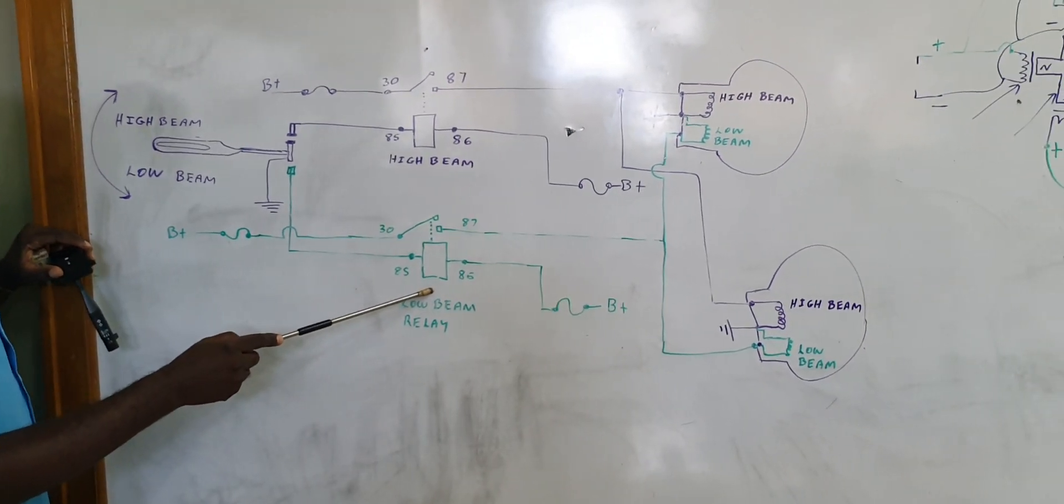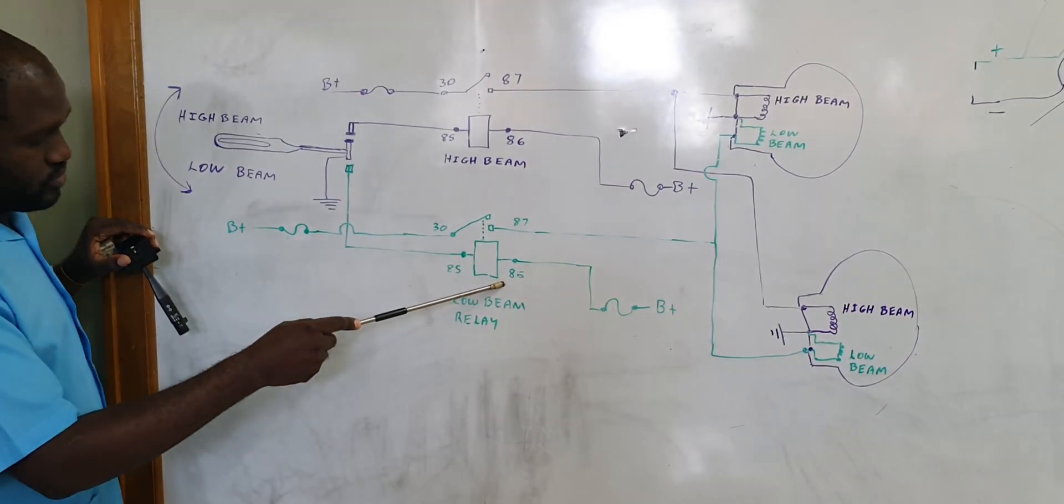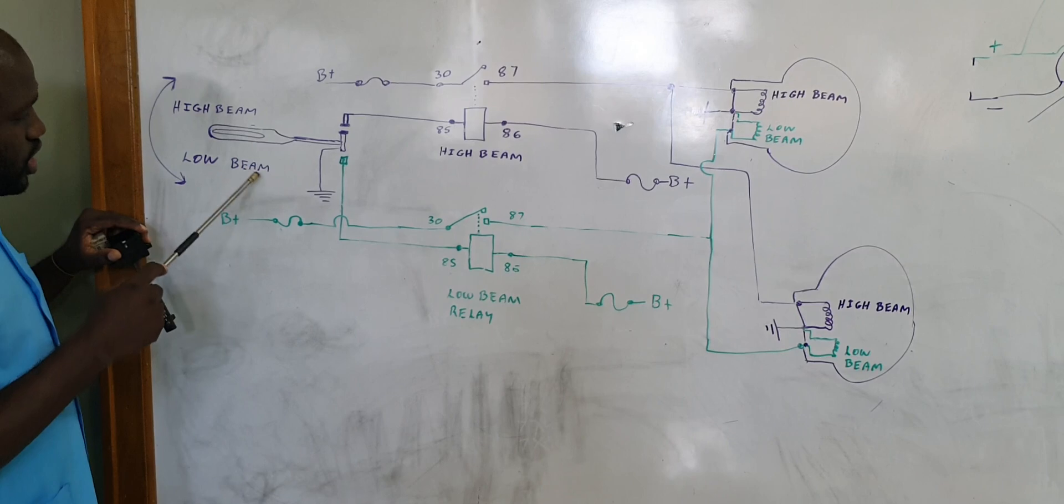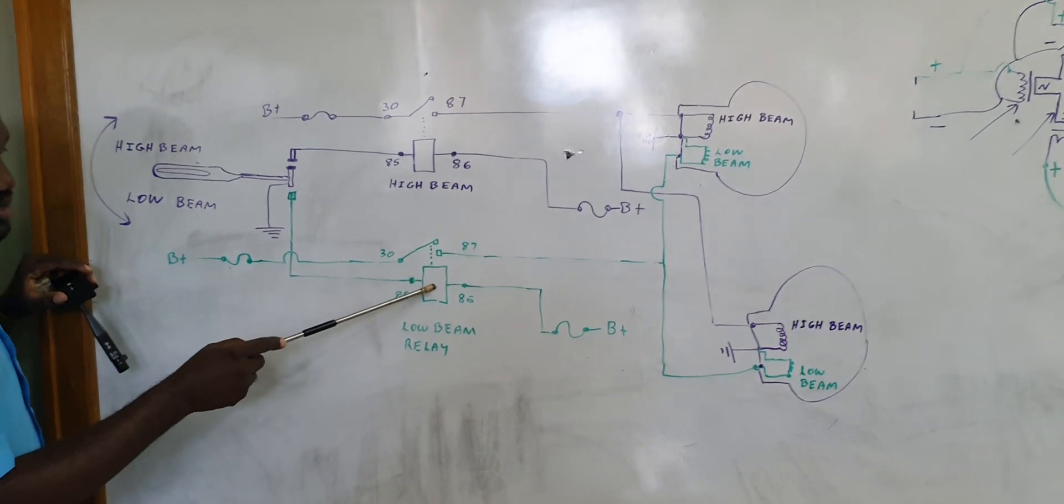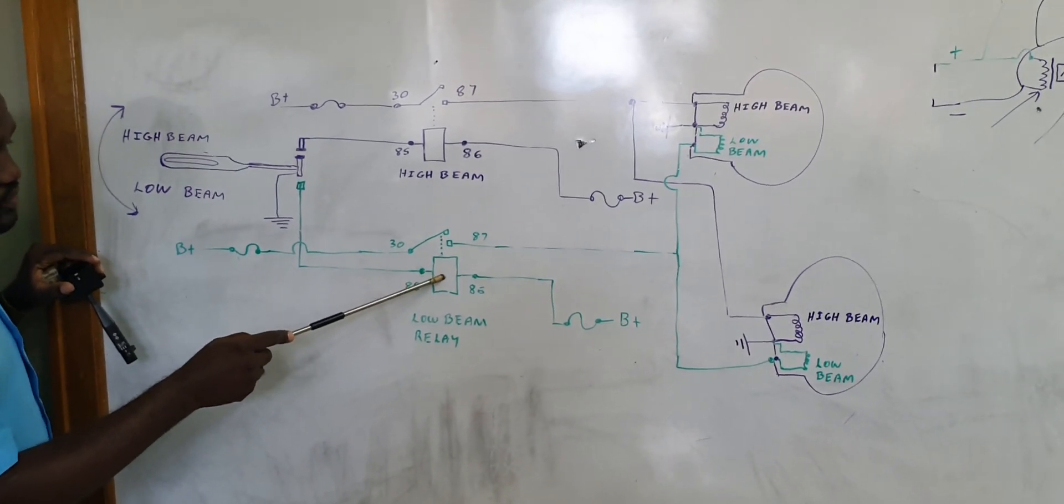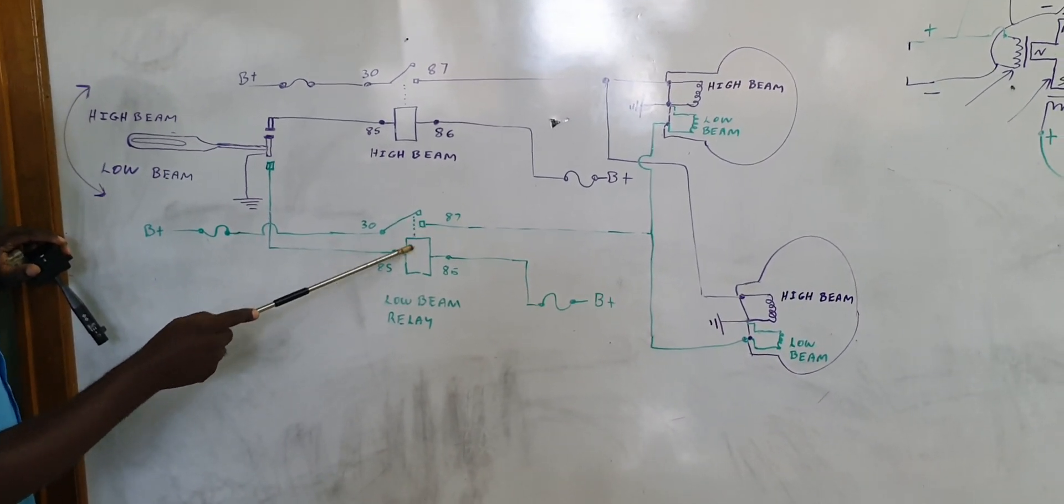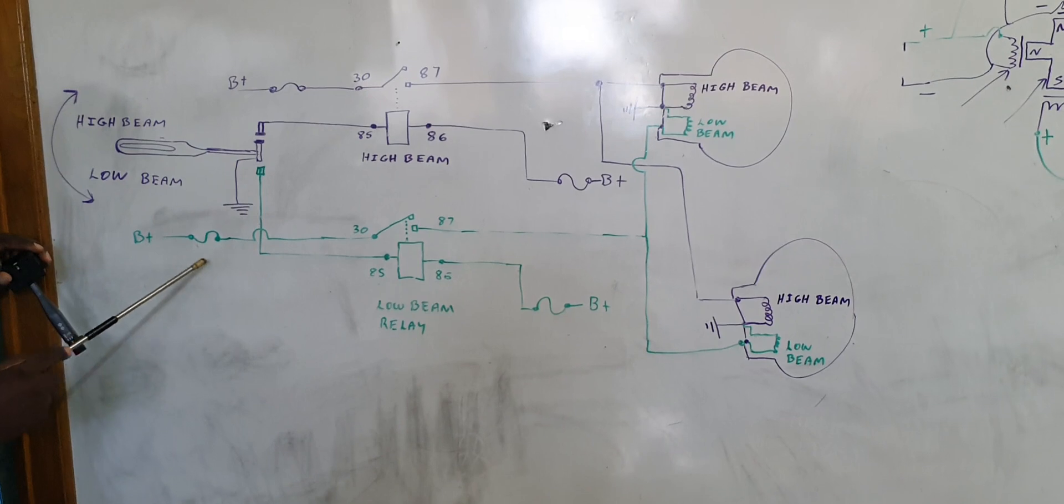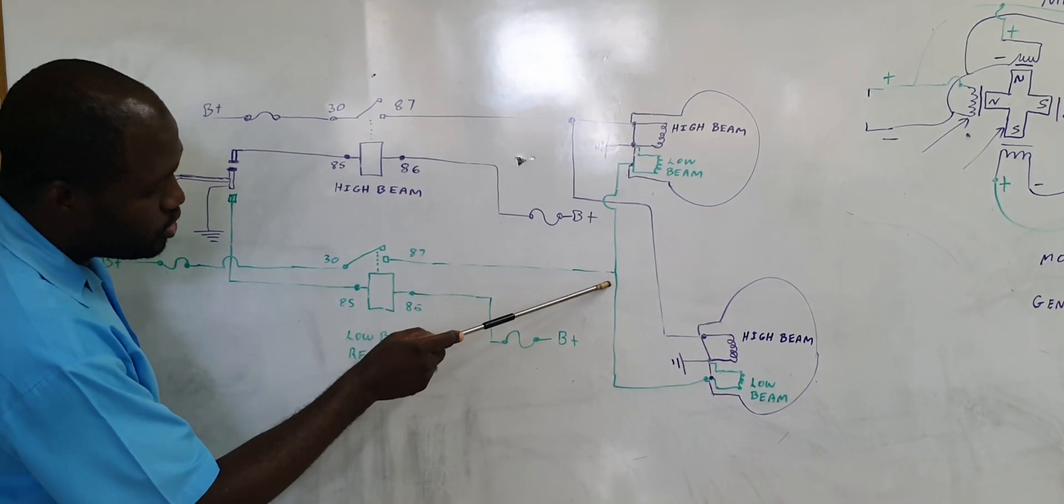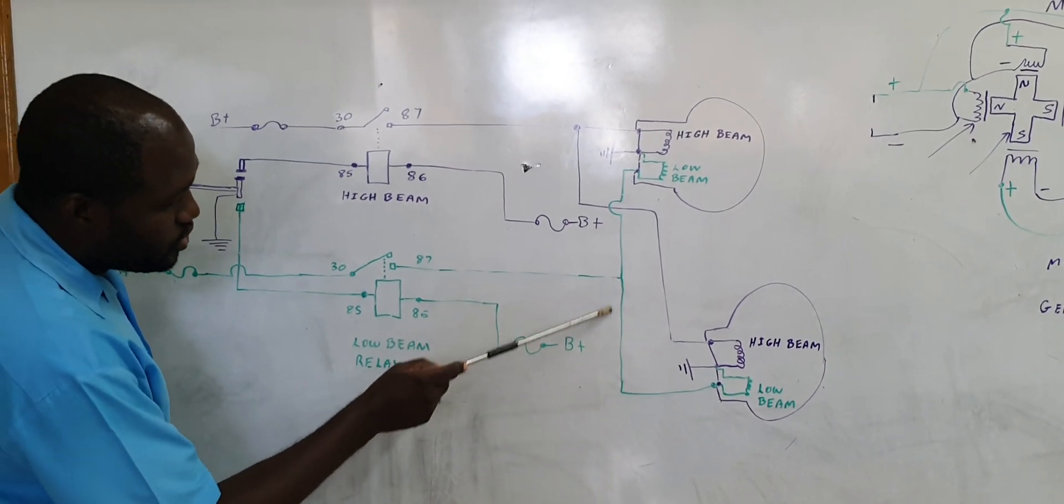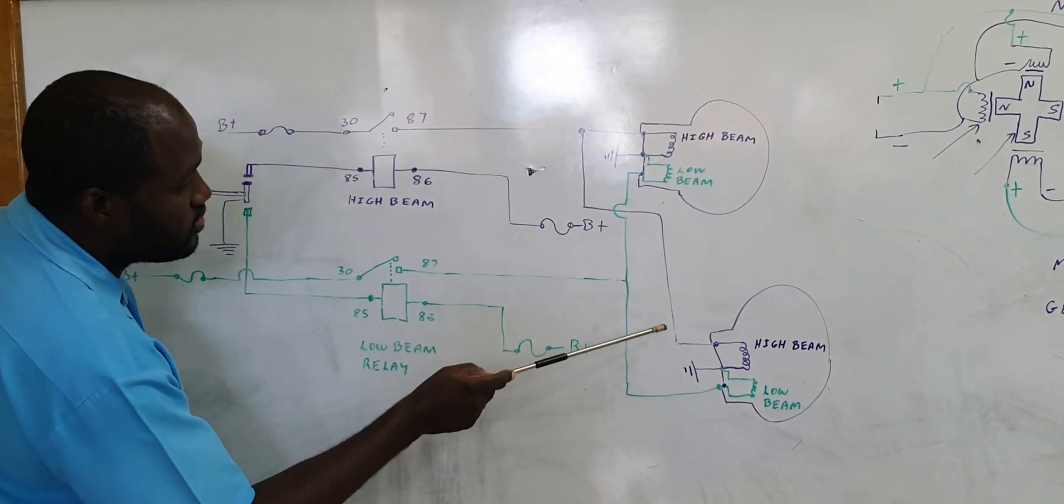Low beam circuit, we already have a power supply to pin 86. When we turn on the low beam, our bronze will send to pin 85. It will create an electromagnetic force and then this force now will cause the circuit between 30 and 87 to be activated. This battery positive now, of course, is across the same voltage to the low beam circuit. So it sends voltage to the low beam filament on both sides.